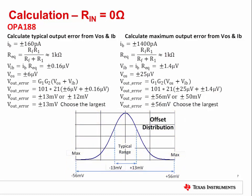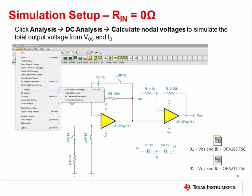Repeat the same procedure for the OPA188. The different specifications of the OPA188 will give a different output voltage result in both the typical and maximum case. The next step is to run a SPICE simulation analysis for the total DC output voltage. The necessary TINA-TI simulation schematics are embedded in this slide set.